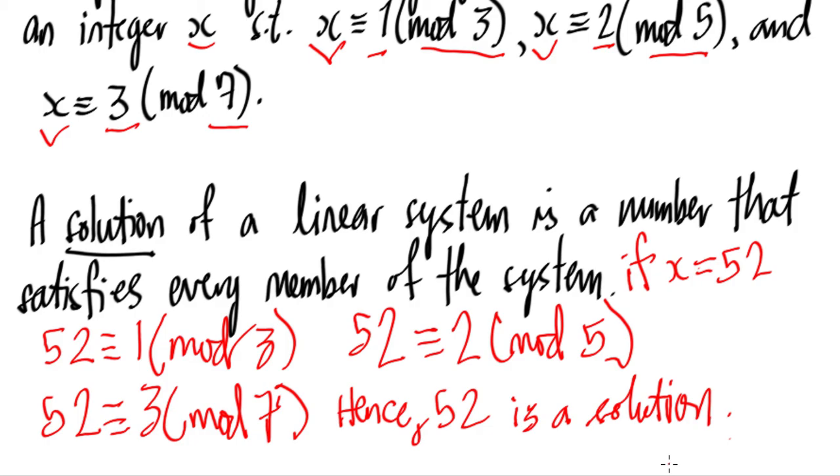Let's try. 22 divided by 3 is 7 remainder 1, that's correct. 22 is congruent to 2 mod 5. 22 divided by 5 is 4 remainder 2. How about here?